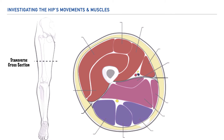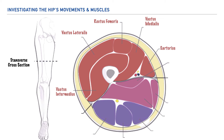Within the anterior compartment we'd find the vastus intermedius, the vastus lateralis, rectus femoris, and the vastus medialis, which make up the quadriceps musculature. But within this compartment we'd also find the sartorius muscle as well.